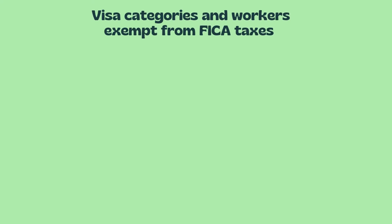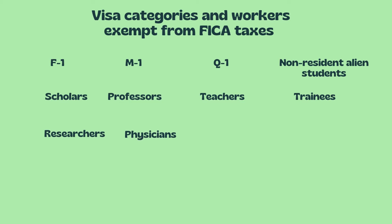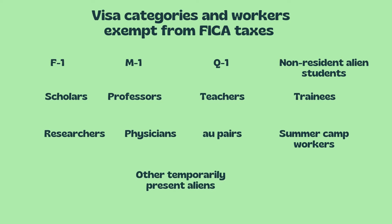Let's understand the visa categories and workers that are exempted. Visa categories include students like F1 visa holders, M1 visa, Q1 visa, non-residential students, scholars, professors, teachers, trainees, researchers, physicians, au pairs, summer camp workers, and other aliens temporarily present in the United States — as long as they are performing the services they were supposed to carry out on the visa that was issued to them.